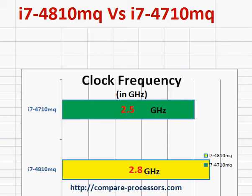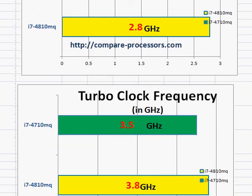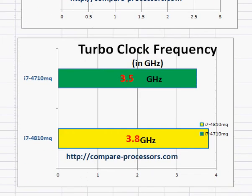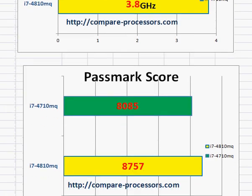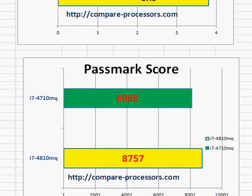The 4810MQ is the top-of-the-line as of August 2014 when we are doing this video. It has 300 megahertz more than the 4710MQ, both in the base clock as well as the turbo clock. You can see a corresponding increase in the PassMark score of roughly 700 points.